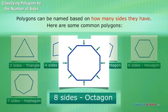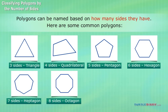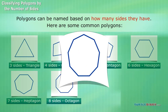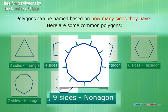Eight sides: octagon. Nine sides: nonagon.